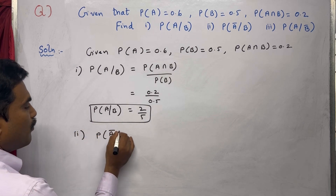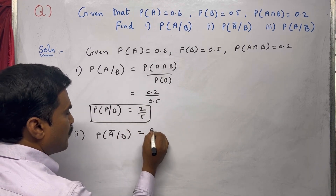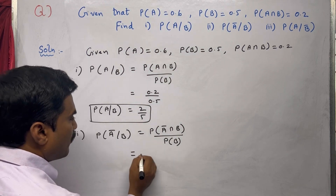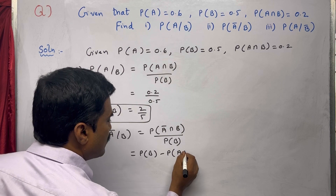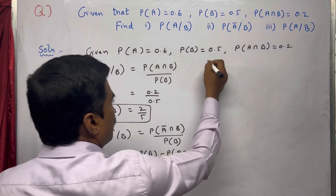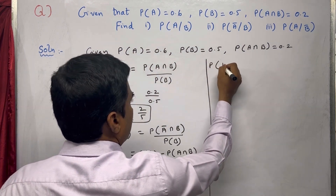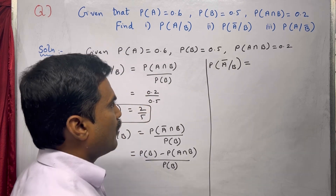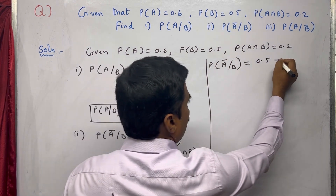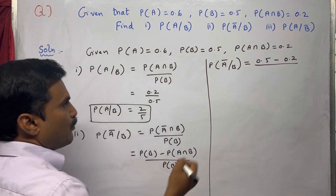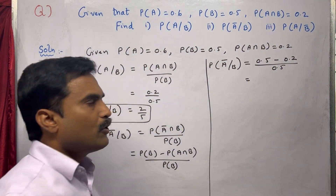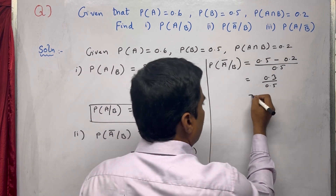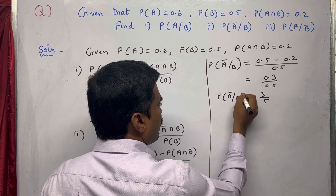Next, the second one is P(Ā|B). Again using the conditional probability formula, we write this as P(Ā∩B) / P(B), which equals P(B) - P(A∩B) / P(B). So P(Ā|B) = (0.5 - 0.2) / 0.5 = 0.3 / 0.5. Multiplying and dividing by 10, we get 3/5.